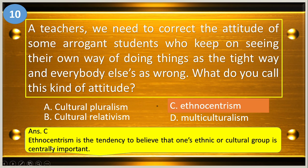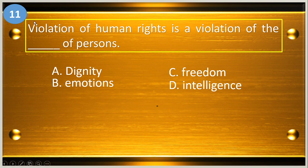Ethnocentrism is the tendency to believe that one's ethnic or cultural group is centrally important. Number eleven: violation of human rights is a violation of the blank of persons. A, dignity; B, emotions; C, freedom; and D, intelligence.